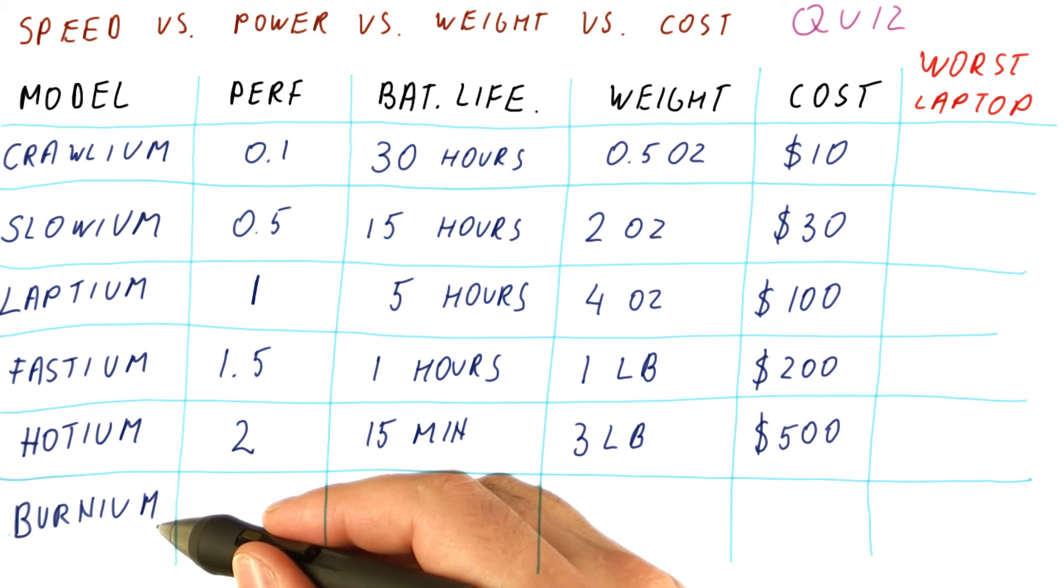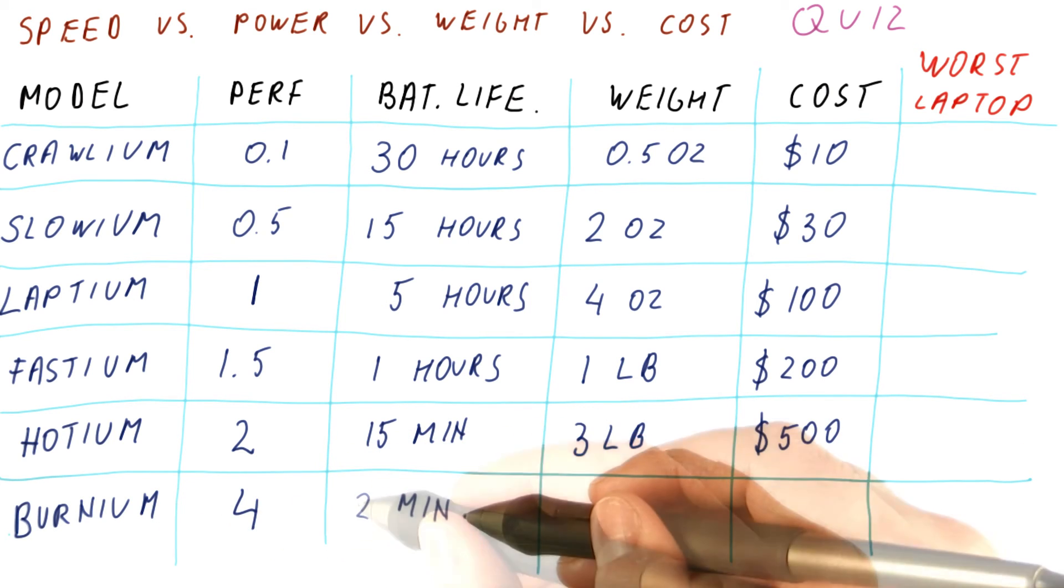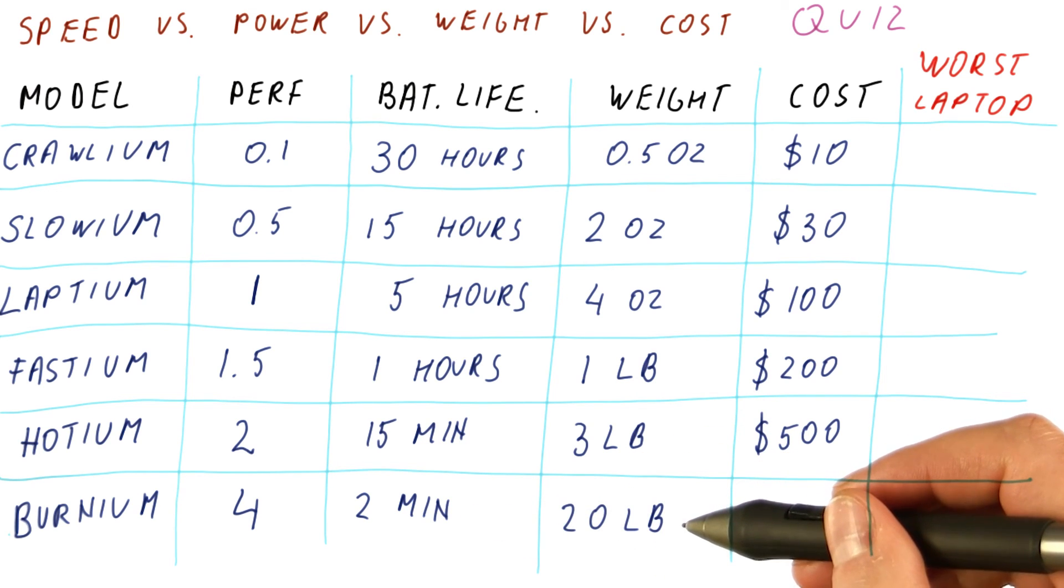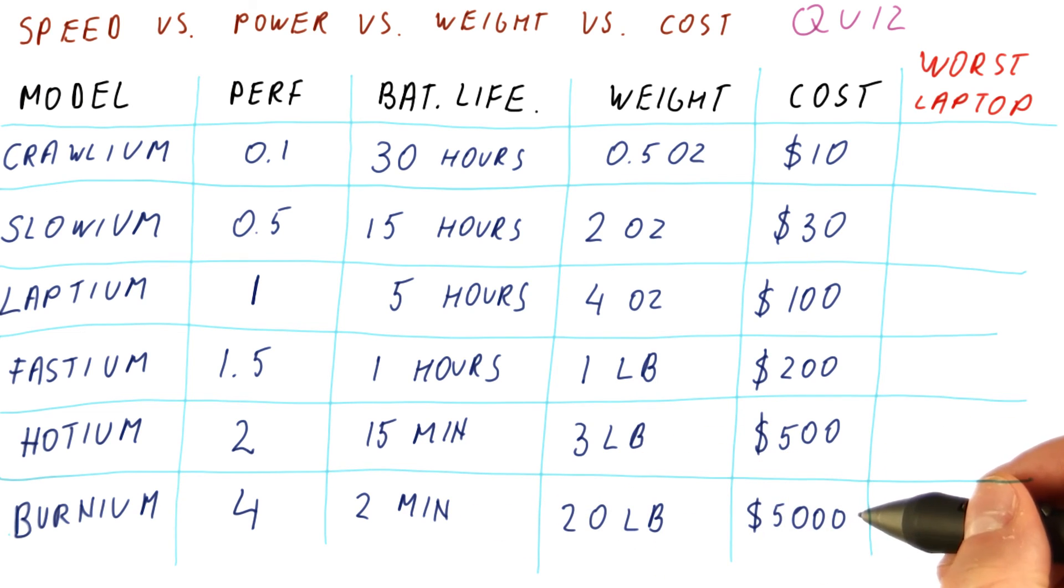And the Burnium processor doubles the performance of the Hotium. Its battery lasts two minutes, it's 20 pounds in weight, and costs $5,000. So which one of these would you least want in your laptop?